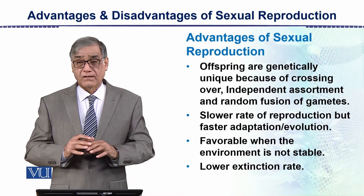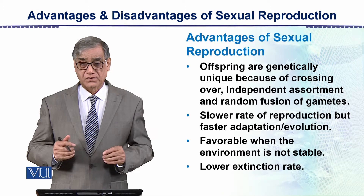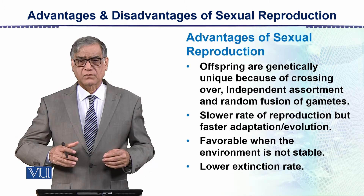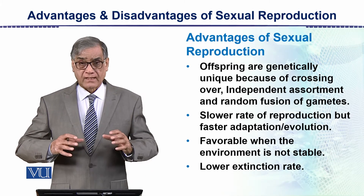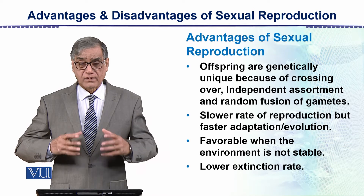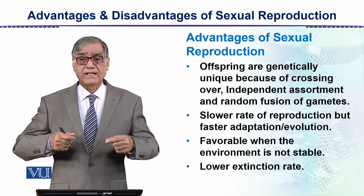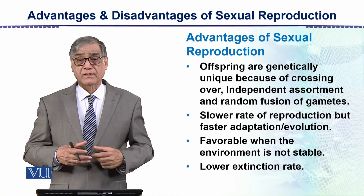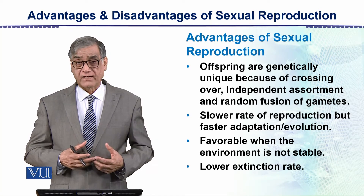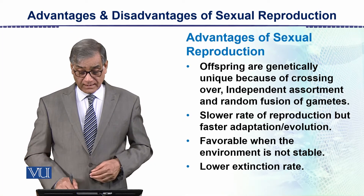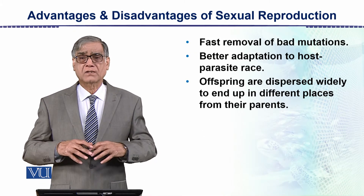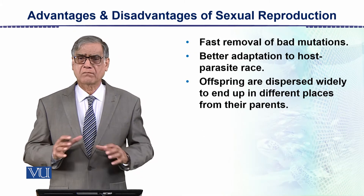When there are many fluctuations in the environment — temperature-wise, humidity-wise — the organisms formed as a result of sexual reproduction have an increased survival rate, and the rate of extinction decreases.